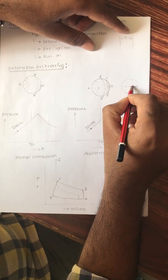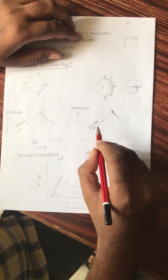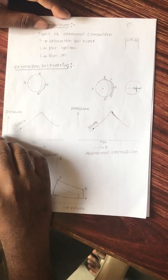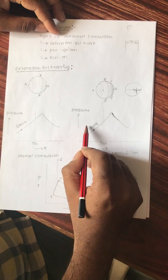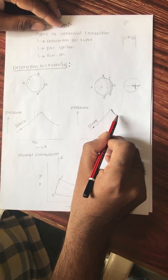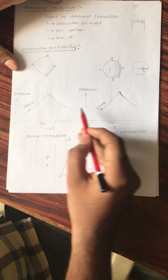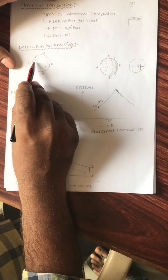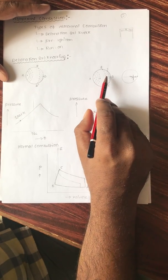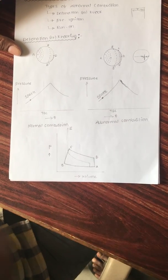These two flames collide at a particular point and create a large, high noise — that is knocking. This knocking occurs in SI engines after TDC, that is near the end of combustion. In diesel engines, knocking occurs at the beginning of combustion, before TDC, but in SI engines it occurs after TDC. The pressure curve becomes rough rather than smooth, indicating knocking and potential engine damage.